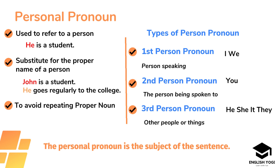The types of personal pronouns are first person pronoun, second person pronoun and third person pronoun. The first person pronoun is 'I' and 'we', the second person pronoun is 'you', and the third person pronoun is 'he', 'she', 'it' and 'they'. One of the most important points to remember is that the personal pronoun is the subject of the sentence. 'He' is the subject in the sentence, and similarly 'he goes to the college' — that 'he' is also the subject.